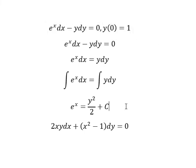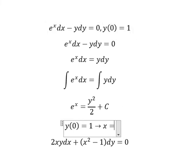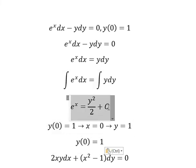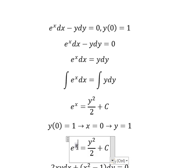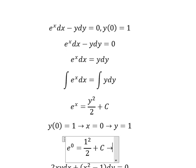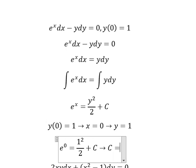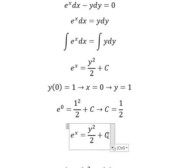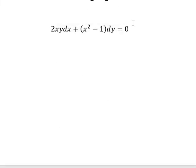Now we apply the initial condition: when x equals 0, y equals 1. So we substitute 0 in here and 1 in here. We move this term to the left and we get C equals 1 over 2. We put 1 over 2 here and this is the final answer.